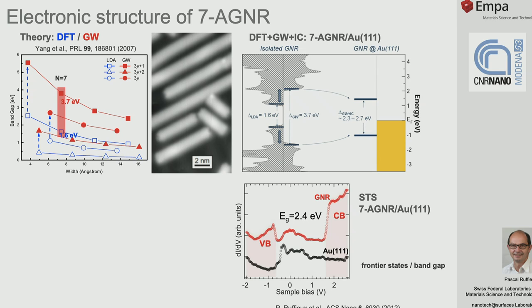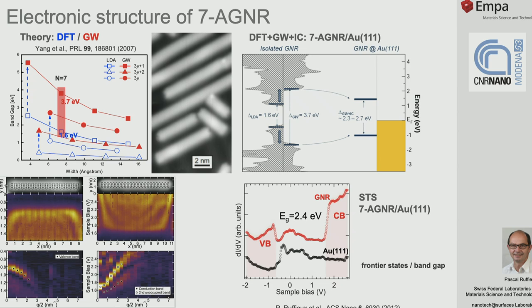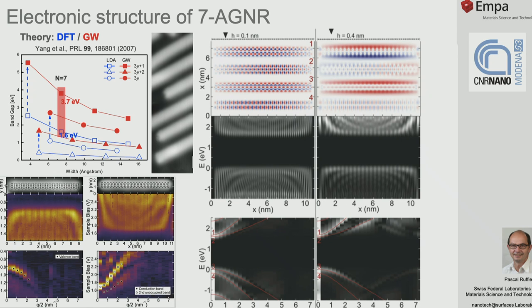We can do more with the experiment. Recording the energy-resolved local density of states along the ribbon axis and performing a Fourier transform gives access to the band structure of the ribbon. From this we can retrieve the effective mass of electrons on the band, which comes out very close to the theoretical prediction. One must be careful, however: simulating the same experiment in theory shows that if the STM tip is not close enough to the substrate, some bands will be missed.